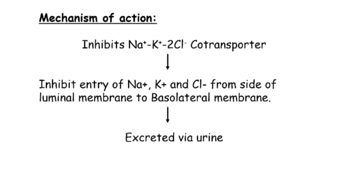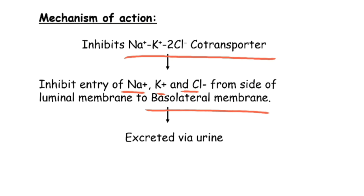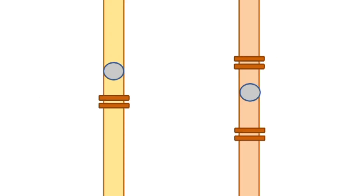Now let us look at the mechanism of action of high ceiling diuretics. First, they inhibit the sodium, potassium, and chlorine co-transporter. Thus, it inhibits the entry of sodium, potassium, and chlorine from the luminal side to the basolateral membrane. Thus, sodium, potassium, and chlorine are excreted via urine.